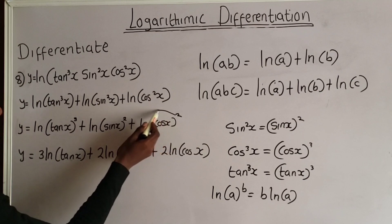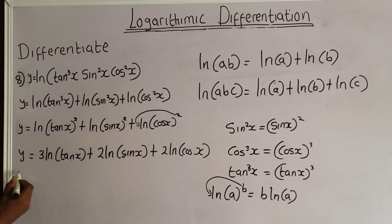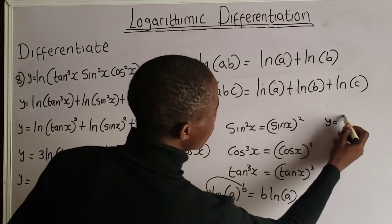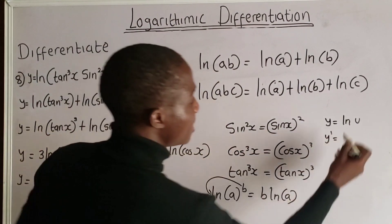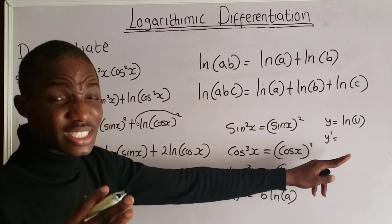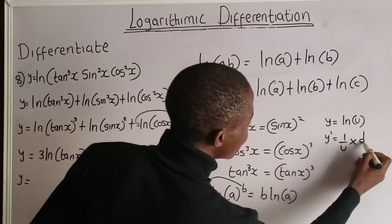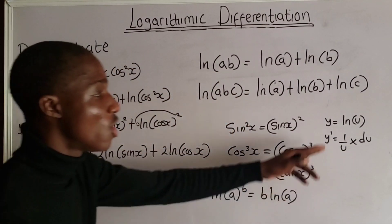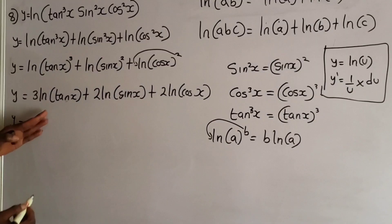So y is equal to 3 ln(tan x) plus 2 ln(sin x) plus 2 ln(cos x). Now let us take the derivative. Don't forget that if y equals the natural log of u, then the derivative of y equals 1 over u multiplied by the derivative of u — that is, the reciprocal of the function inside the bracket times its derivative. Always remember this formula when dealing with logarithmic differentiation.